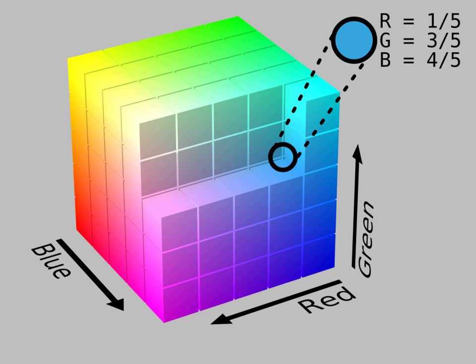RGB is a convenient color model for computer graphics because the human visual system works in a way that is similar, though not quite identical, to an RGB color space.